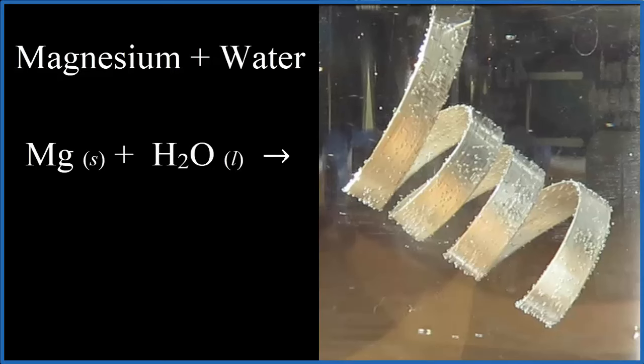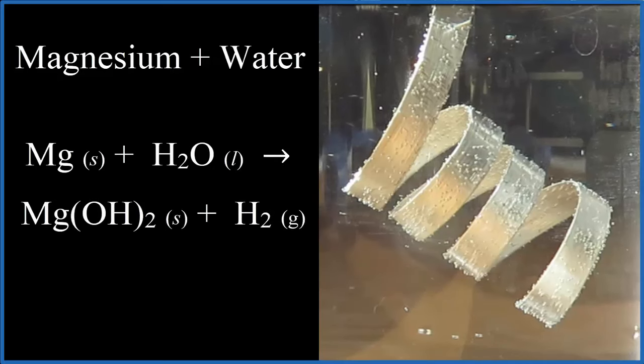So to recap, we put magnesium metal in liquid water. We get magnesium hydroxide, that's Mg(OH)2, which is a solid, plus H2 gas.